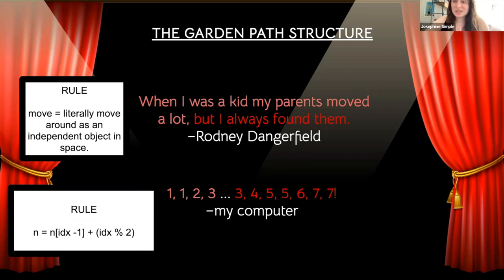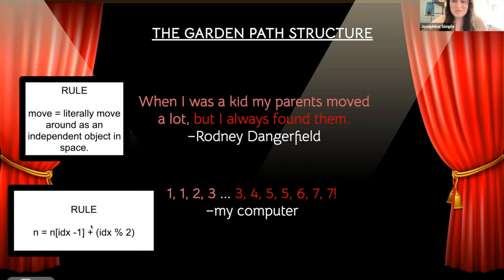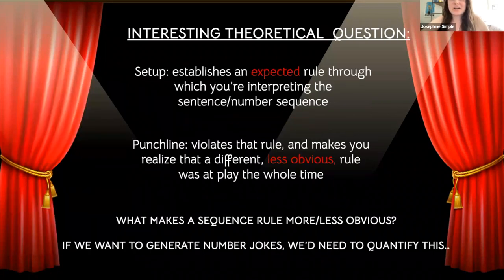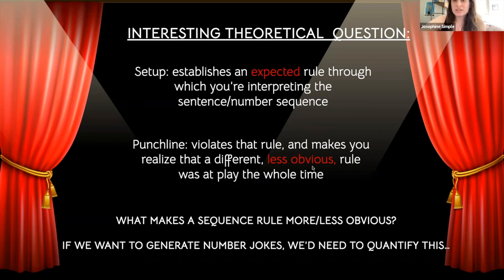In the Dangerfield joke, 'move' means literally to move around as an independent object in space — that's the semantic rule. For this number sequence, instead of it being the Fibonacci numbers, you're actually adding one to the previous number every other time — a simpler way of describing the rule that covers both the setup and the punchline. This raises an interesting theoretical question: if a setup establishes an expected rule through which you interpret the sequence, and the punchline violates that rule revealing a different, less obvious rule was at play the whole time — what makes a sequence rule more or less obvious?